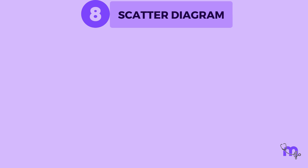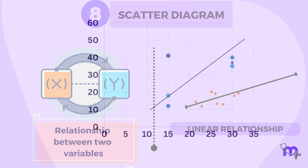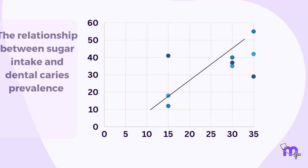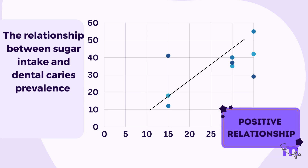Lastly, we have the scatter diagram, which shows the relationship between two variables. If the dots cluster around a straight line, it shows a linear relationship. For example, the relationship between sugar intake and dental caries prevalence can be represented with a scatter diagram, which would show a positive relationship.